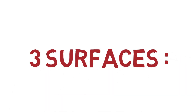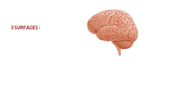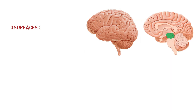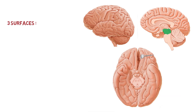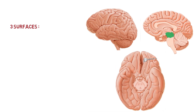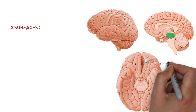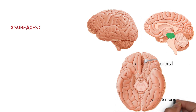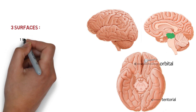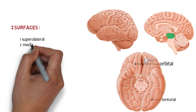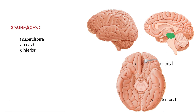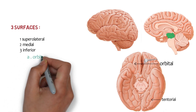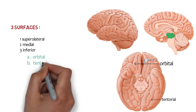Now moving to the anatomy of the cerebrum. The cerebrum has three surface areas: the superolateral surface, the medial surface, and the inferior surface. The inferior surface is further divided into two parts — the orbital part and the tentorial part.